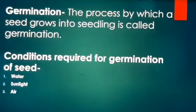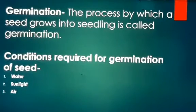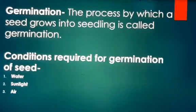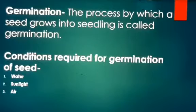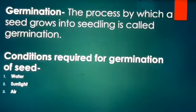The next topic is germination of a seed. Germination is a process by which a seed grows into a young plant, or baby plant, called a seedling. On the arrival of favorable conditions, when a seed grows into a young plant or seedling, that process is known as germination. For the germination of a seed, three conditions are essential: water, sunlight, and air.